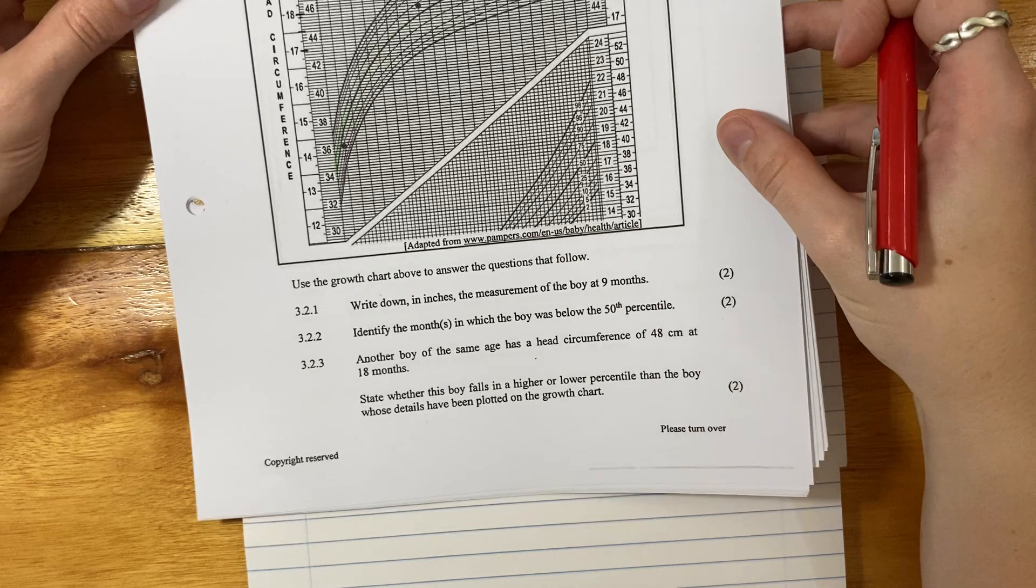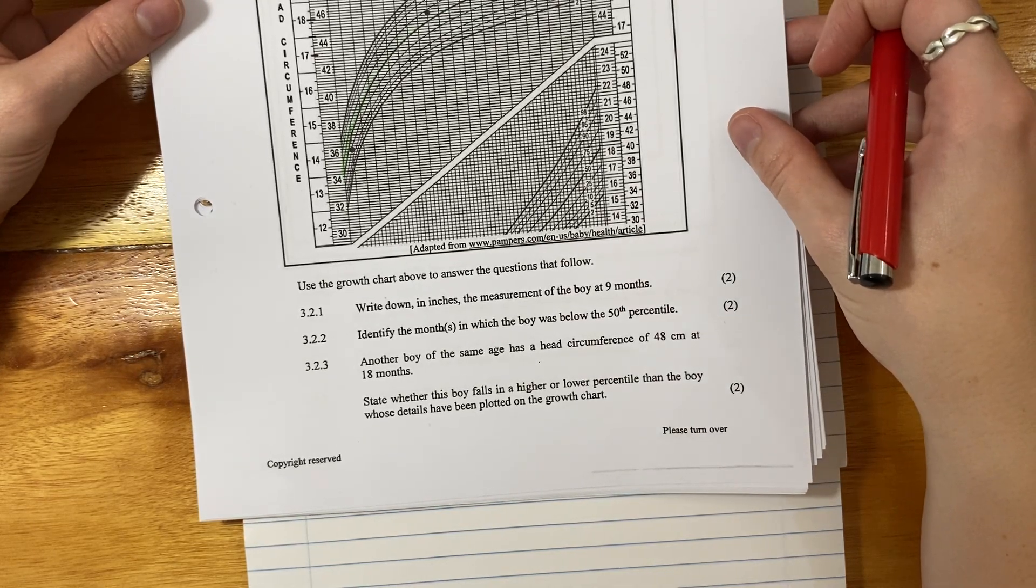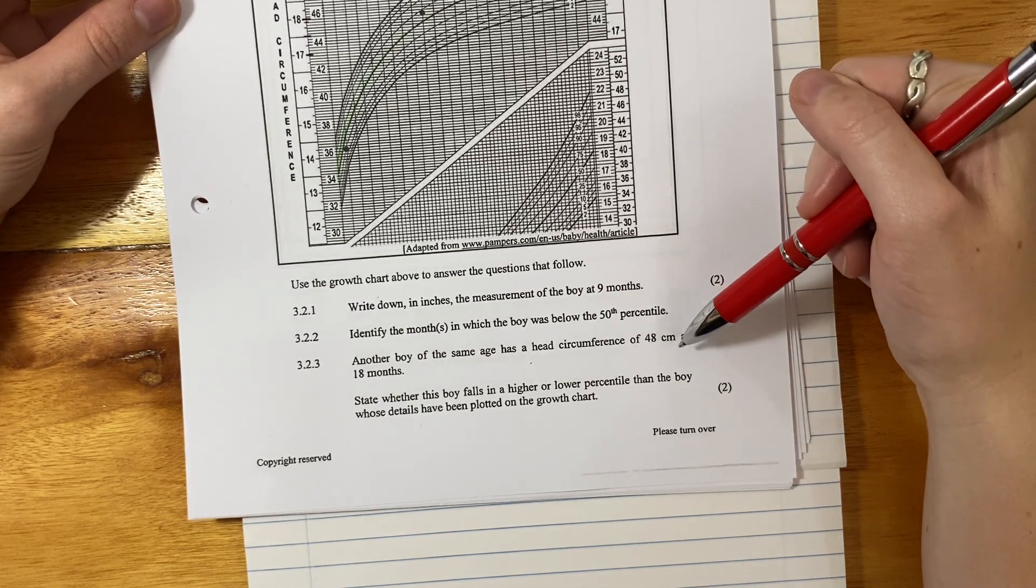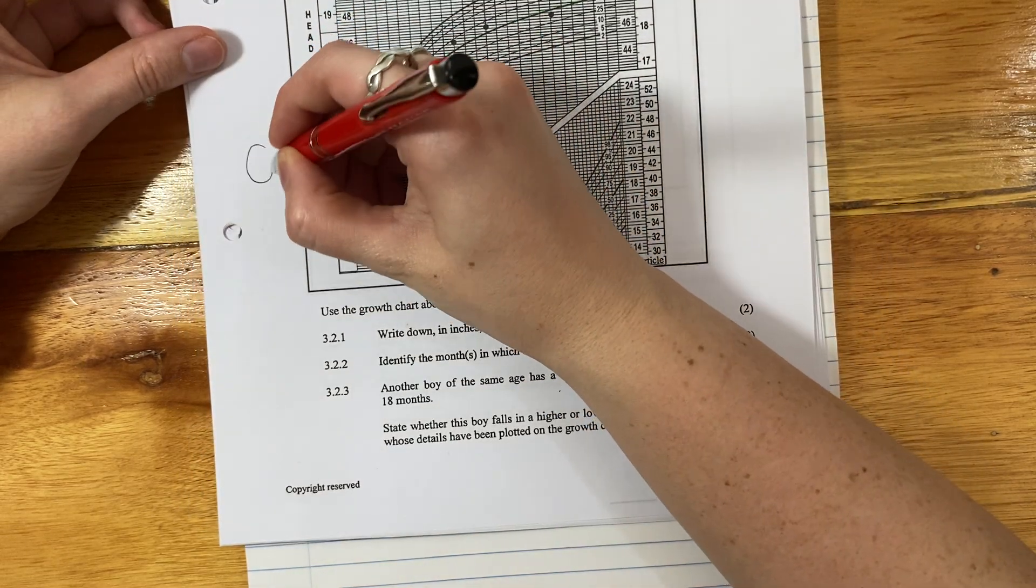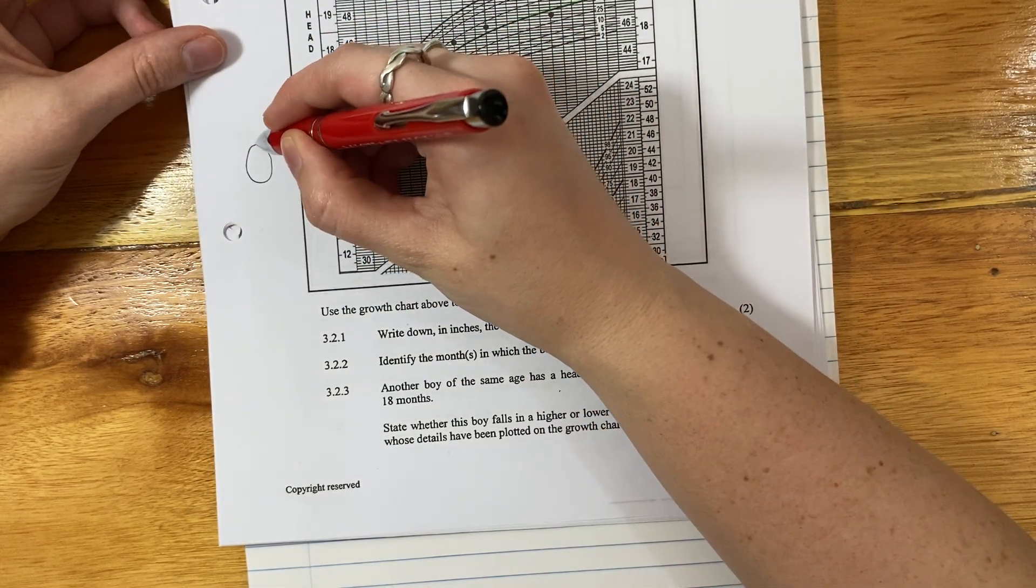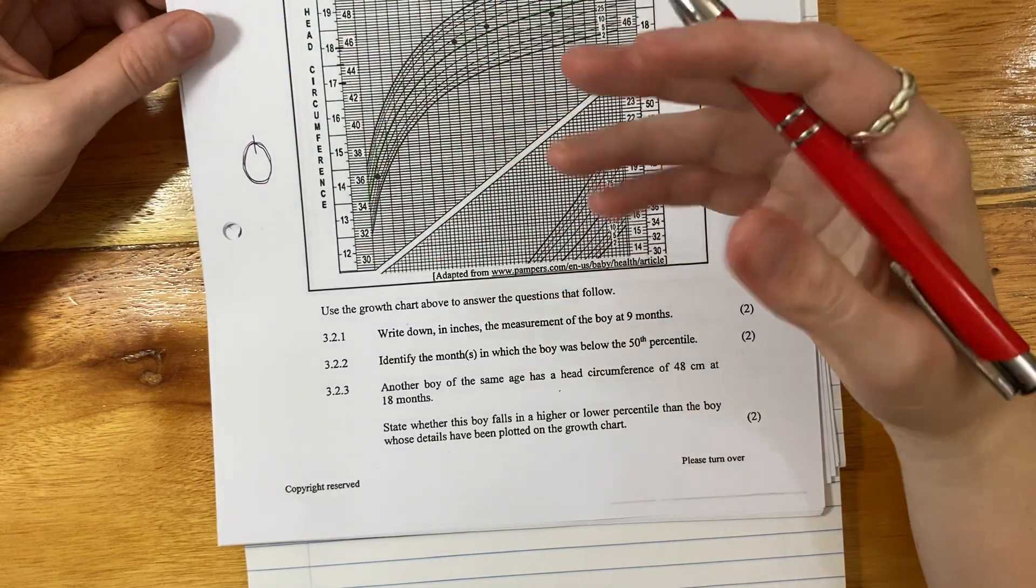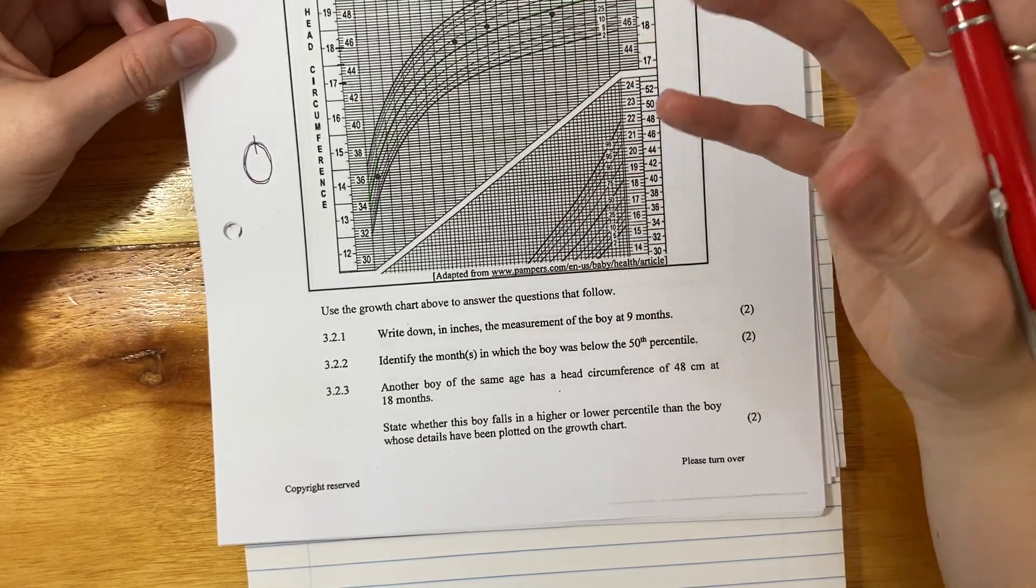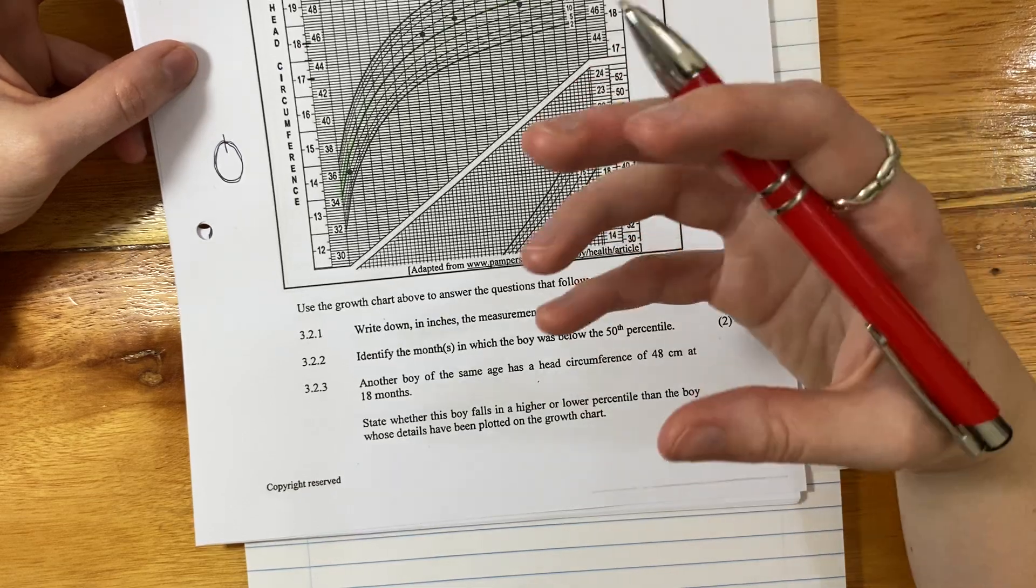Let's do the last question for this video. 3.2.3. Another boy of the same age has a head circumference of 48 centimeters at 18 months. Remember, head circumference is basically saying, if this is someone's head looking from the top, it's saying, what is the measurement if I start over here, and I go the whole way around? What is the distance? That's what circumference is. The reason they call it circumference is because it's circular. Any other shape would be perimeter.